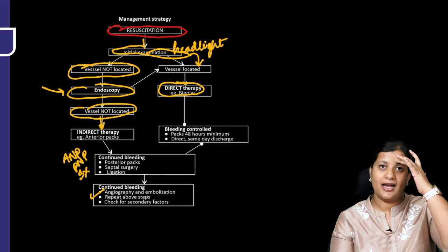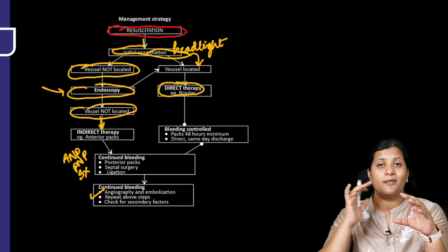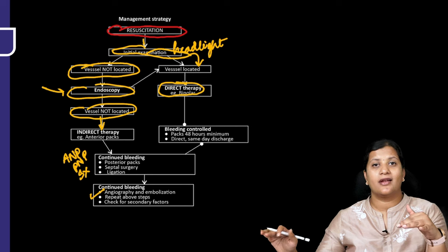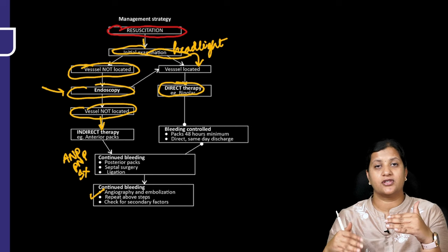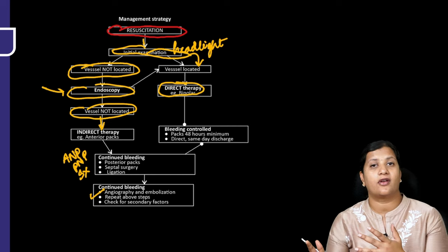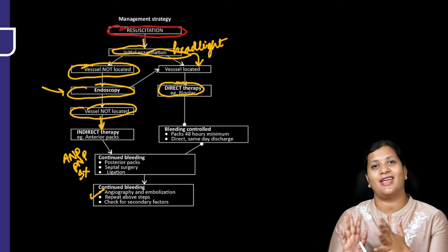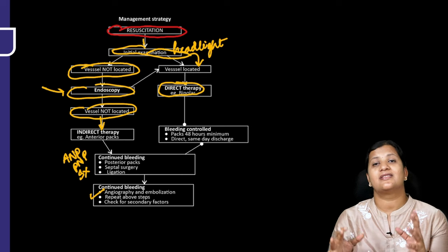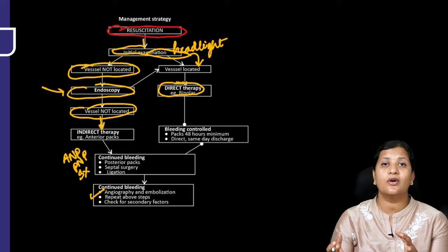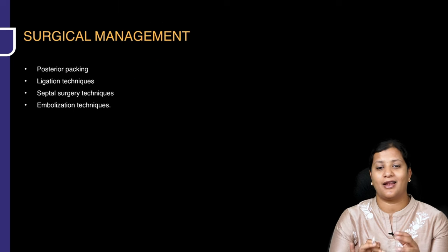To summarize the algorithm: first, headlight examination — vessel located, cauterize; not located, proceed to endoscopy. On endoscopy — vessel located, cauterize; not located, go for packing. If packing fails, proceed to surgery — either septal surgery or cauterization. If bleeding continues, perform angiography and embolization. This is the management algorithm for a patient with epistaxis.